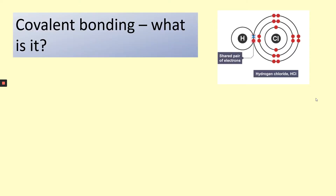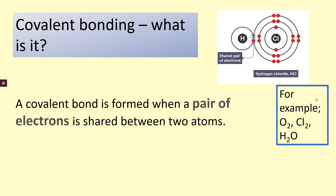So what actually is covalent bonding? On your right hand side you can see hydrogen chloride, and you can see the bonding between the two atoms. Covalent bonding is the sharing of electrons. One covalent bond is when a pair of electrons is shared between the two atoms. Ionic bonding was the transfer of electrons between atoms; covalent bonding is the sharing of electrons. You can see in that picture the hydrogen and the chlorine are sharing a pair of electrons on their outer shell.